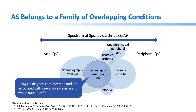The spectrum includes axial spondyloarthritis, undifferentiated peripheral spondyloarthritis, reactive arthritis, peripheral spondyloarthritis, radiographic axial spondyloarthritis, non-radiographic forms, psoriatic arthritis, and IBD-associated spondyloarthritis. Delays in diagnosis are common and associated with irreversible damage and worse outcomes.